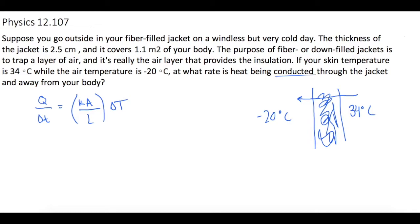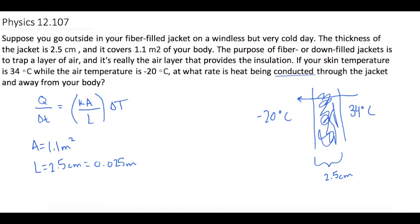They tell us that the area is 1.1 square meters. They tell us L — here is L — which is 2.5 centimeters. The change in temperature is 34 degrees Celsius minus negative 20 degrees Celsius, which gives us a delta T of 54 degrees Celsius, or 54 Kelvin.